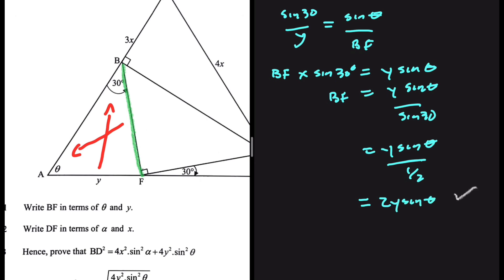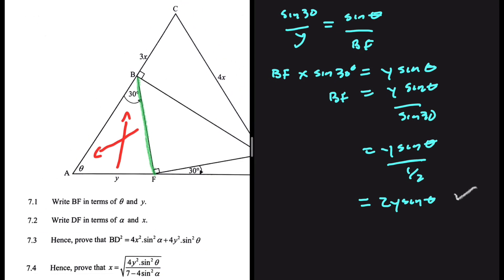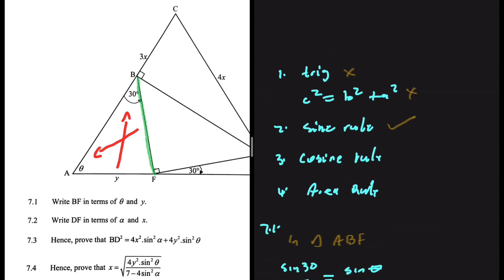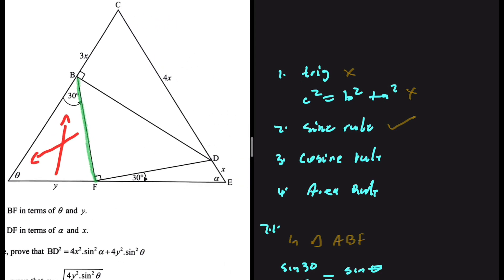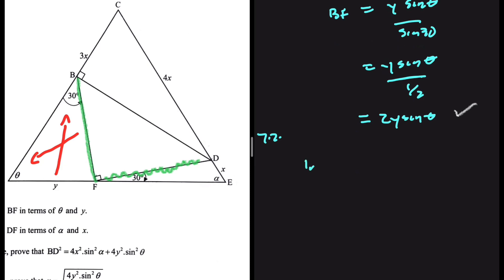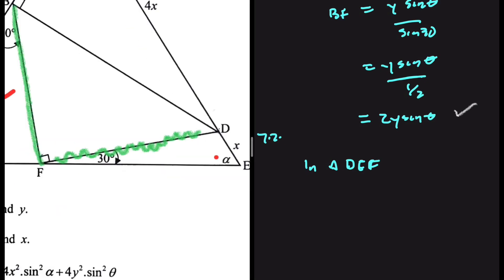That is the answer to 7.1. Let's go ahead and look at 7.2. Again, we're looking at our steps — the first step is to determine whether our triangle is right-angled or not. DF is a side on triangle DFE, so we're going to use that triangle. In triangle DEF, it is not a right-angled triangle, so we cannot use trig ratios or the theorem of Pythagoras. We're looking for DF, which is opposite angle alpha. And we have angle F of size 30 degrees, which is opposite X. So the sine rule is going to work again.